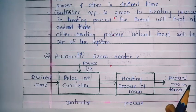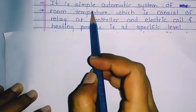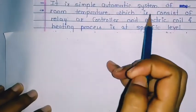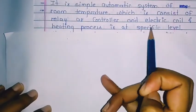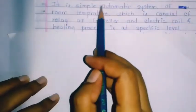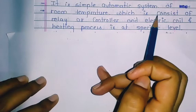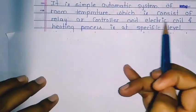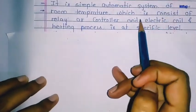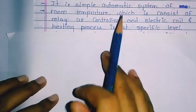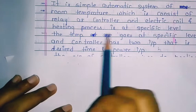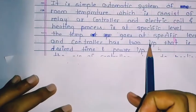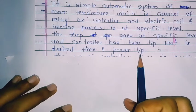First point: it is a simple automatic system for room temperature, which consists of a relay as a controller and an electric coil in the heating process. The controller again has two inputs: desired time and power.